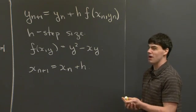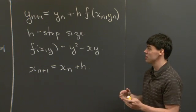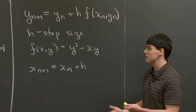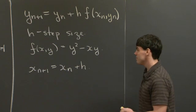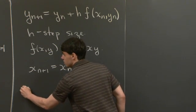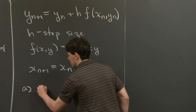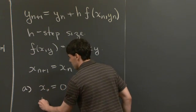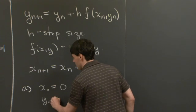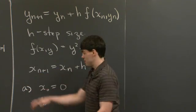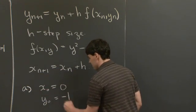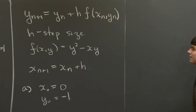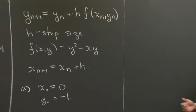So for part a, we're asked to integrate the solution that starts at y(0) = -1 to y(1). So what this means for part a is we want x_0 to be 0, and we want y_0 to be -1. Now, to further integrate this equation, the quickest way to do it, especially if you're in a test scenario, is to build a table.